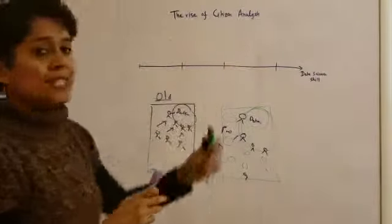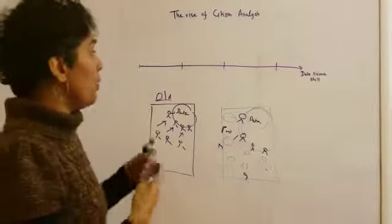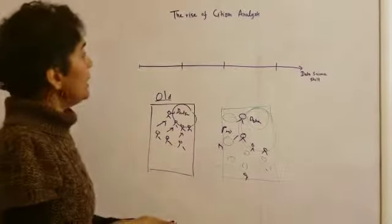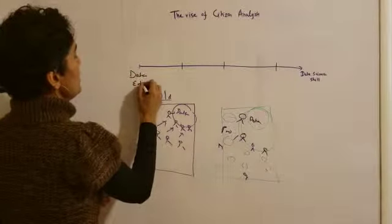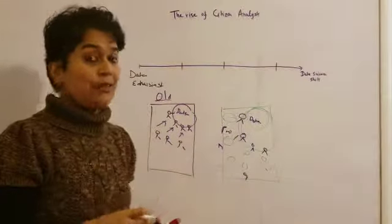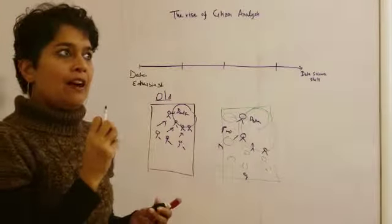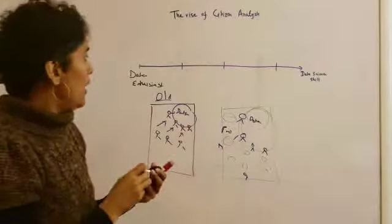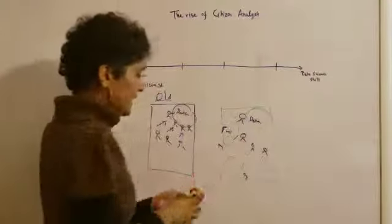But as we talk about citizen analysts, there are more personas. If you're starting down the data literacy journey in your organizations, there are more profiles that you will encounter. Typically in an organization, you will have people who are data enthusiasts. Data enthusiasts are people who are excited about data. They want to learn more. They want to use data, but they don't yet know how to leverage data. They're not afraid of data. They're excited about it. Yet they don't necessarily know how to use it. This continuum, by the way, is increasing data science skill.